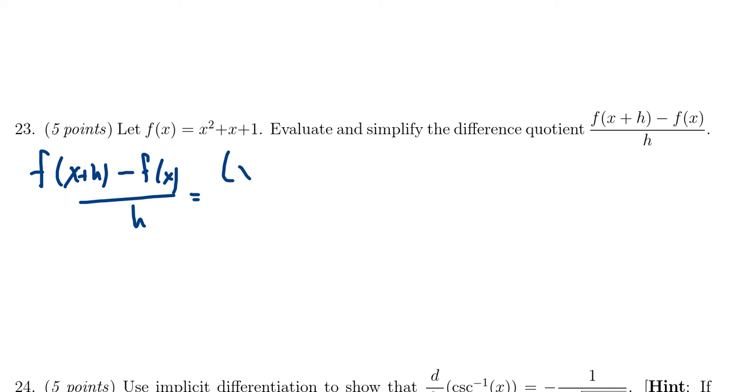So we're going to get an x plus h squared plus x plus h plus 1, and then we're going to subtract from that f of x, which we can just copy down the formula as it's given, that is to say x squared plus x plus 1, and this all sits above the h right here.